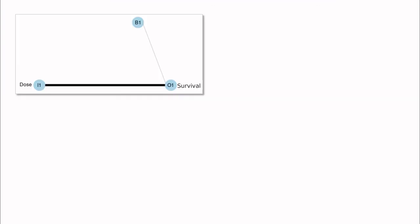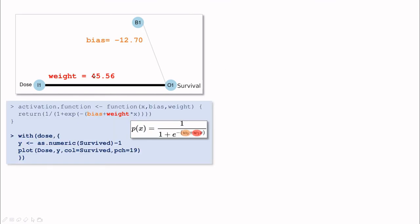So let me emphasize this analogy again. So we have this neural network, one neuron, input, the weight is this thick black line, and then the bias. The weight in this case was 45, and the bias minus 12.